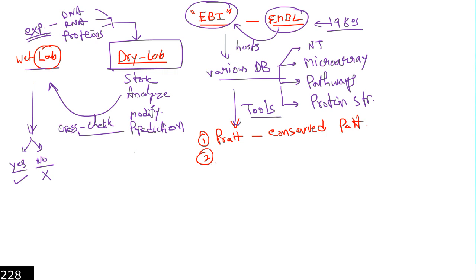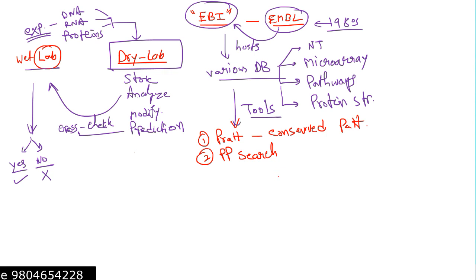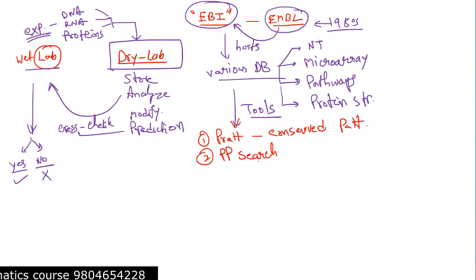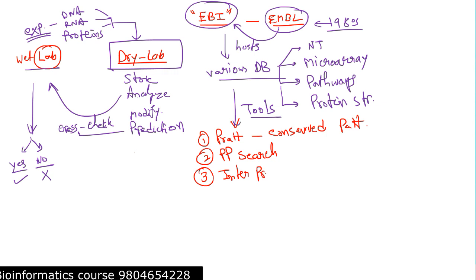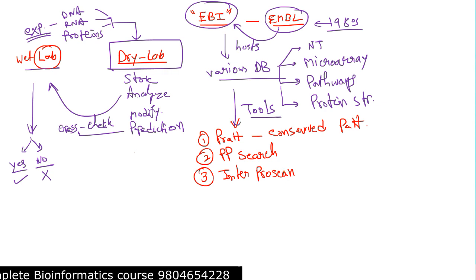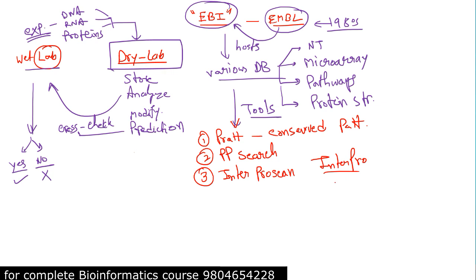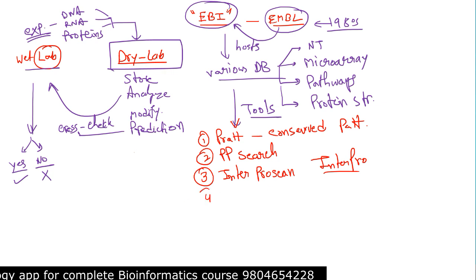The second tool is PP Search, which compares the query sequence against all patterns stored in the PROSITE database — that is called PP Search comparison. Another tool is InterProScan, where the query sequence is scanned against InterPro, which contains functional information.